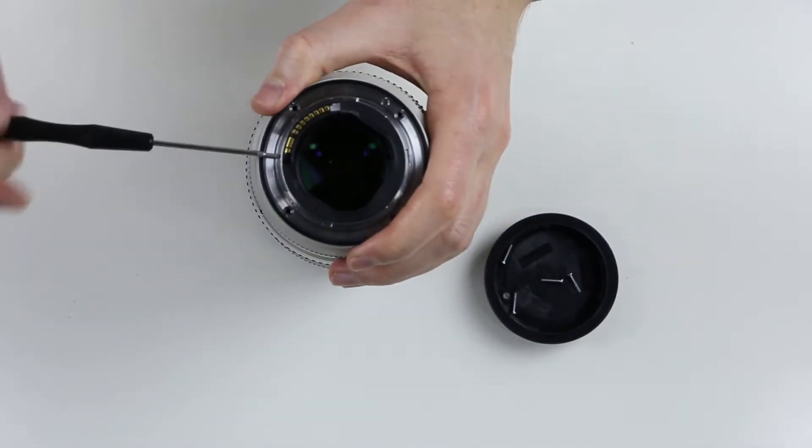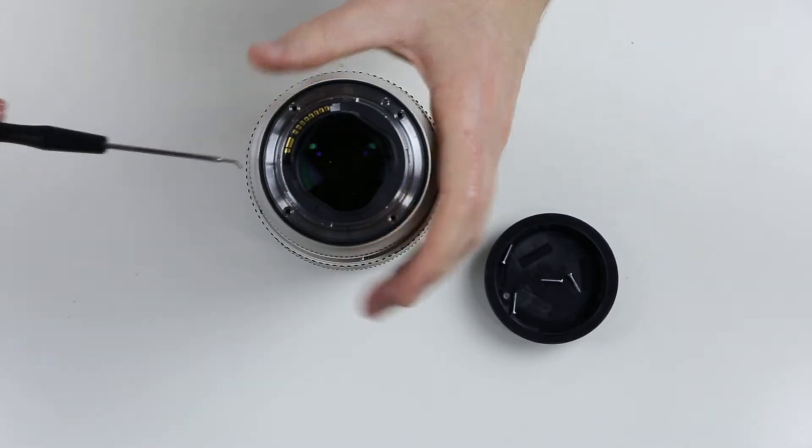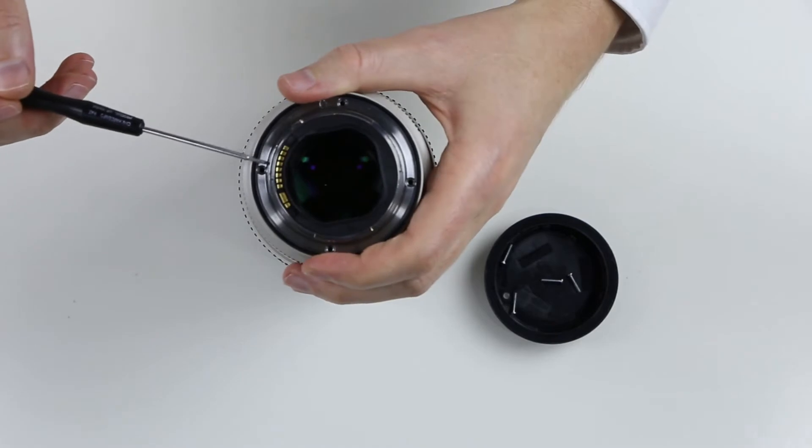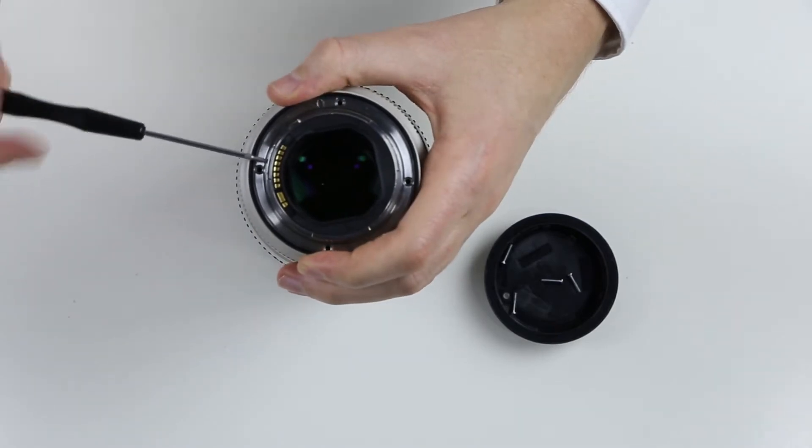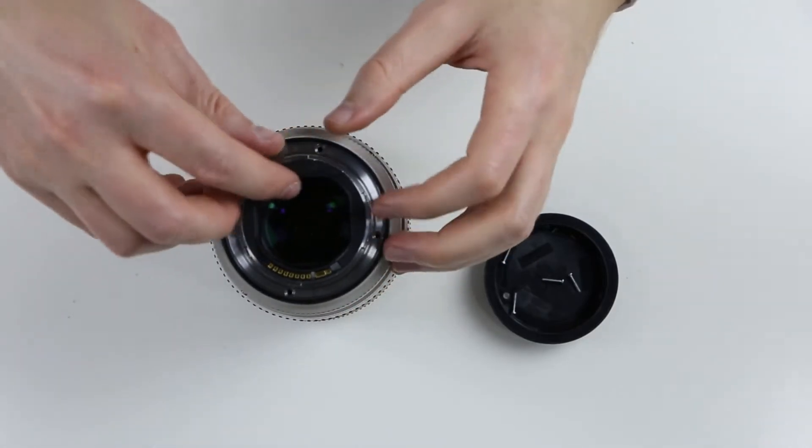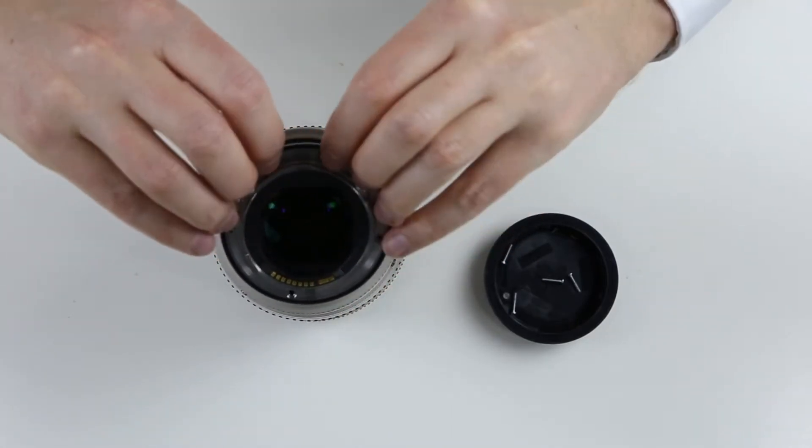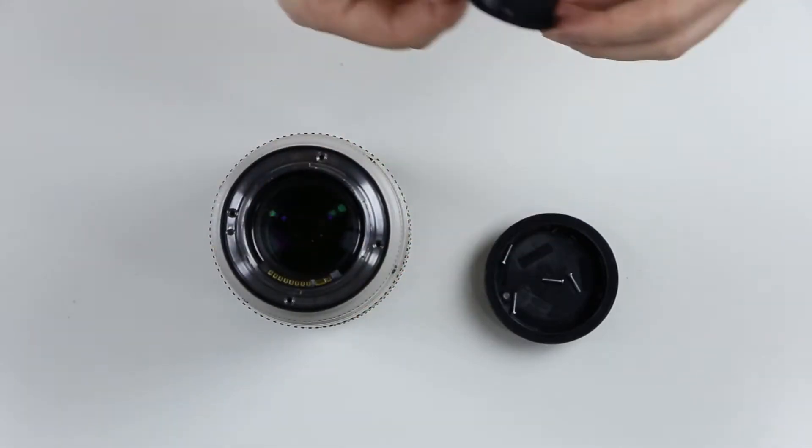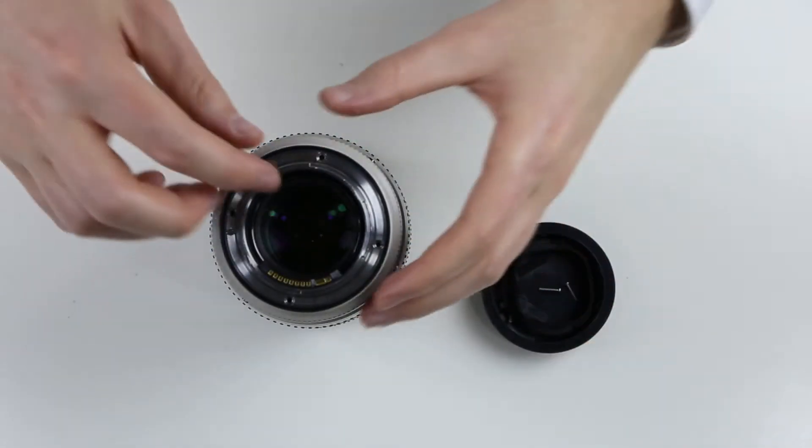Then, remove the two screws which are holding the connector. Slightly lift off the metal bayonet and push up the plastic inner ring. Be careful not to damage the cable of the connector.